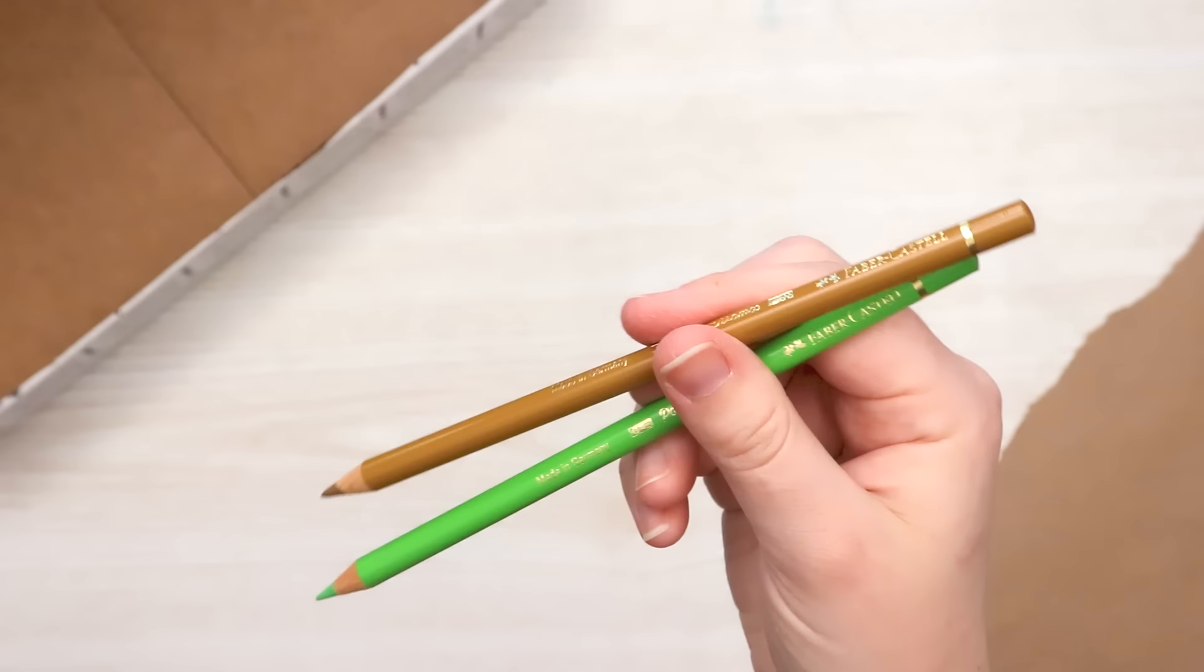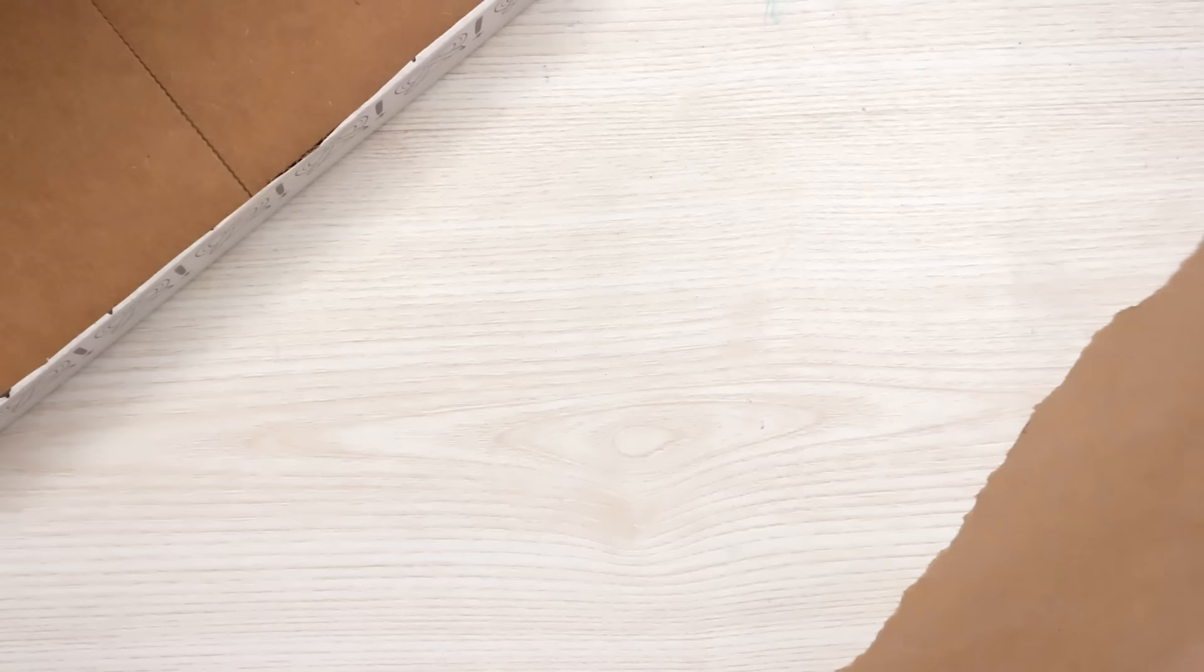And our snack of the month. First we've got two Faber-Castell Polychromos colored pencils in brown ochre and grass green. A Uni Pin fine line brush pen, and look at this, that looks like a needle.